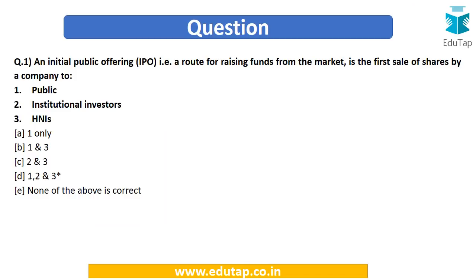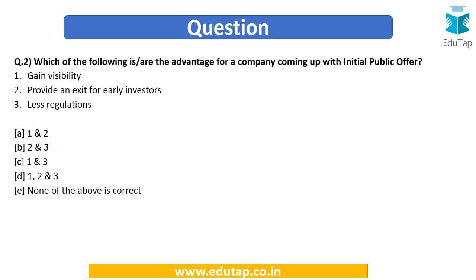We can now easily answer this question. An IPO is not just restricted to the public — it is very broad. Shares are also issued to institutional investors and high net worth individuals. So the answer is option D, that is 1, 2, and 3.